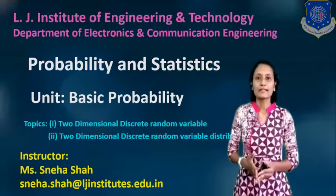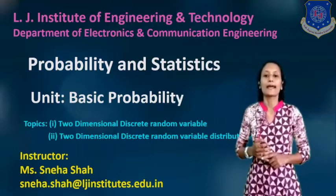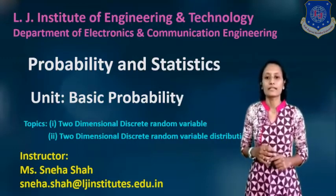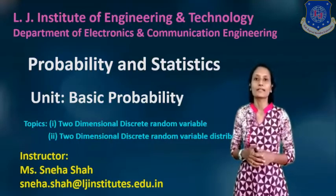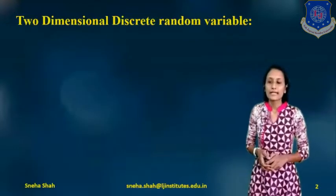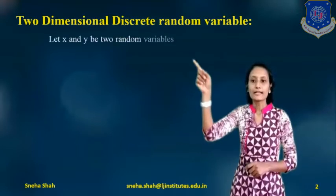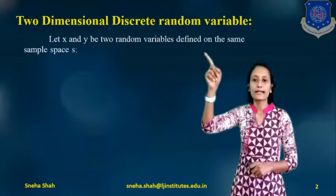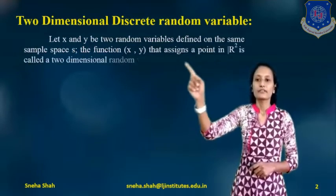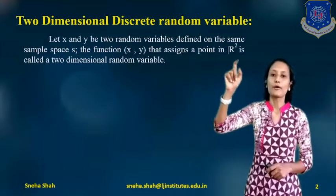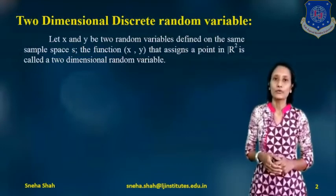Up to the last session, I explained one random variable x — we defined the continuous random variable and the discrete random variable. Now in this session, I will explain for 2-dimensional random variable x and y, starting with the 2-dimensional discrete random variable. Let x and y be two random variables defined on the same sample space S. The function (x, y) that assigns a point in R² is called a 2-dimensional random variable.